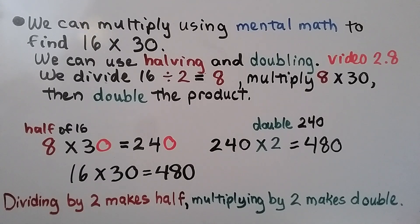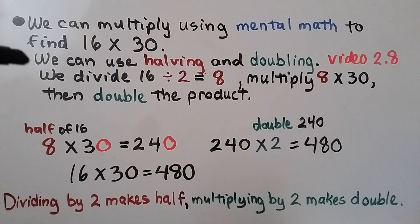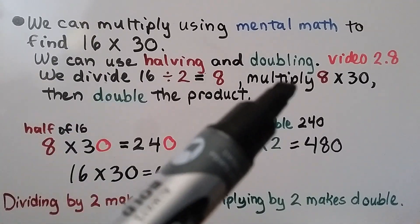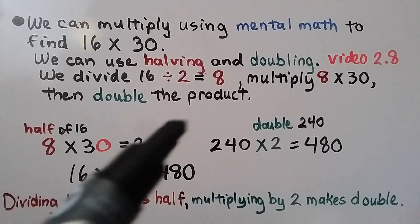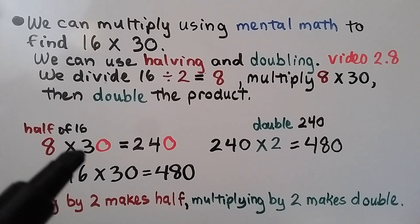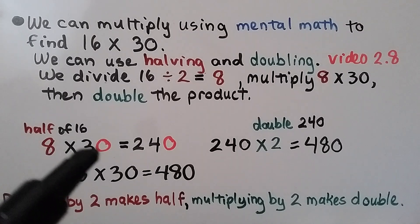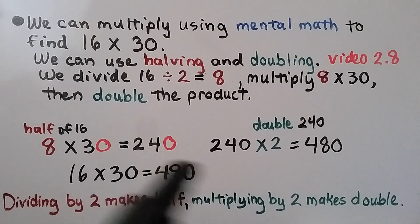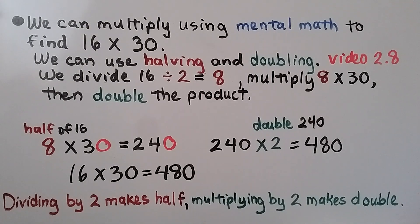We can multiply using mental math to find 16 times 30 using halving and doubling — we learned that in video 2.8, linked in the description. We divide 16 by 2 to cut it in half, giving us 8. Then we multiply 8 times 30: that's like 8 times 3, which is 24, with one zero in the factor, giving us 240. Now we double the 240 by multiplying by 2, and that's 480. So 16 times 30 equals 480. Dividing by 2 makes half; multiplying by 2 makes double.